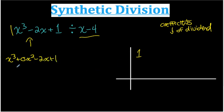That means when I write my coefficients, my coefficients, I need to include a 0 for any missing terms. So my coefficients are 1, 0, negative 2, 1. So I write 1, 0, negative 2, 1.